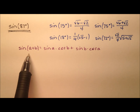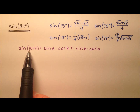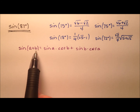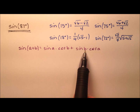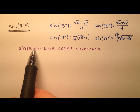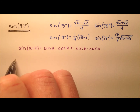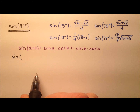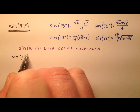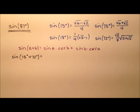The sum angle identity has this expansion: the sine of A plus B equals the sine of A times the cosine of B, added to the sine of B times the cosine of A. We need two values for A and B that add up to 87 degrees and are nice angles to work with. So let's use 15 and 72 degrees, since 15 plus 72 equals 87 degrees.